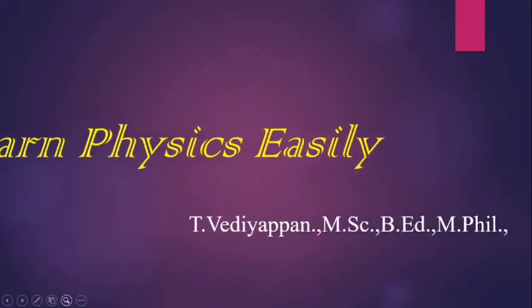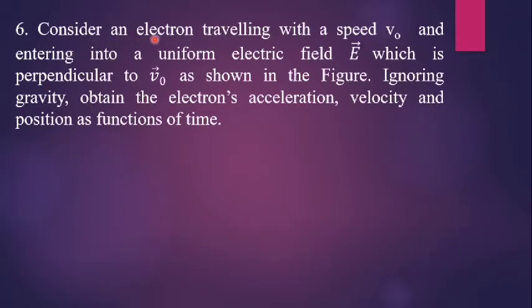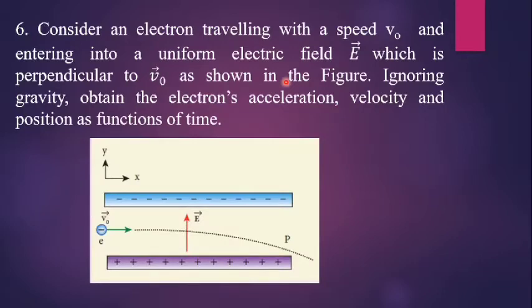Welcome to our Learn Physics Easily YouTube channel. In this video, we are seeing a fantastic problem. Consider an electron traveling with a speed v0 and entering into a uniform electric field E-vector, which is perpendicular to v0 vector as shown in the figure. Ignoring gravity, obtain the electron's acceleration, velocity, and position as a function of time.